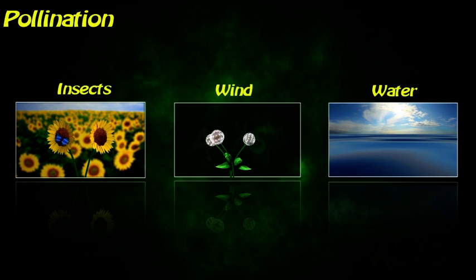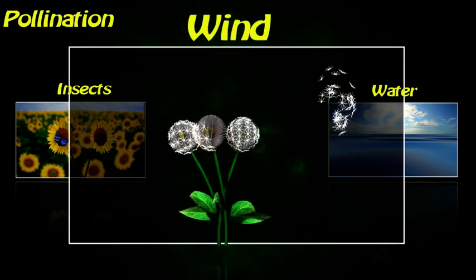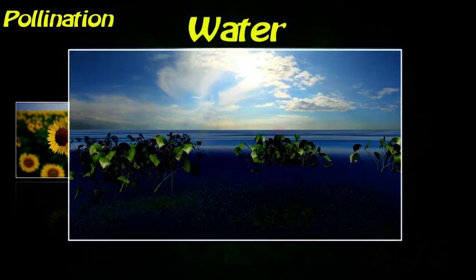Flowers can be pollinated by wind, insects, and water.